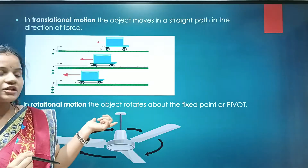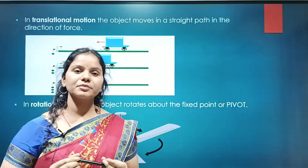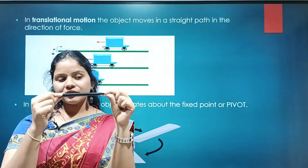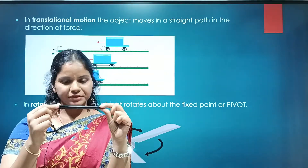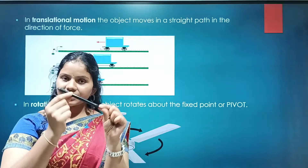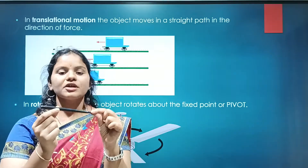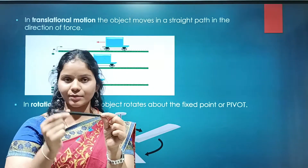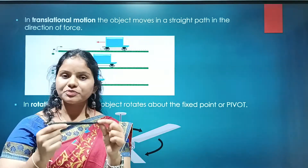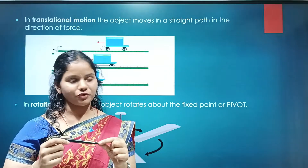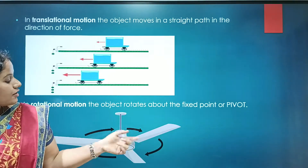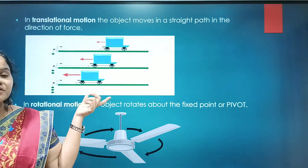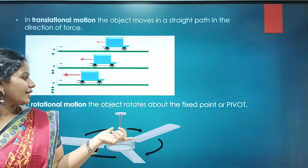The second type is rotational motion. Consider this object — one end is fixed. When you apply a force in any direction, it is not moving in a linear path. Instead, it is rotating about its axis. Such motion is called rotational motion. For example, a fan rotating about its own axis.